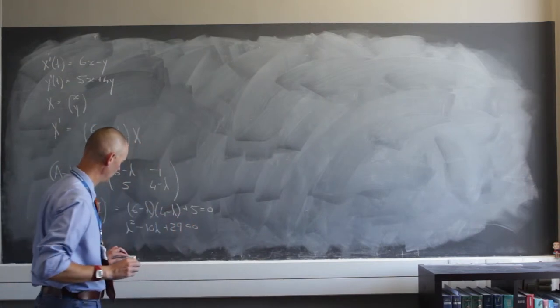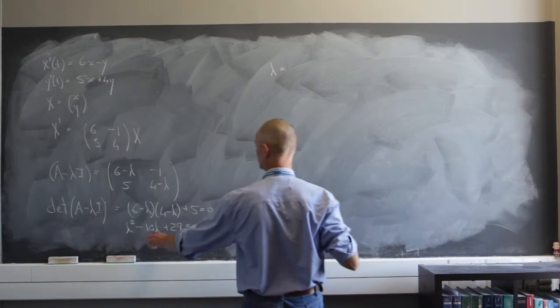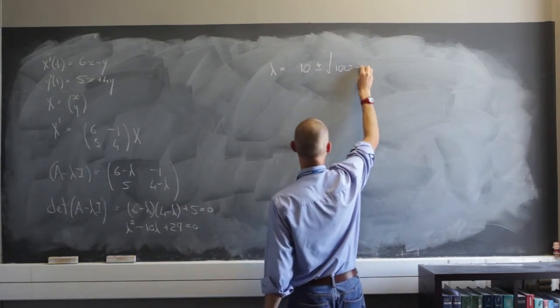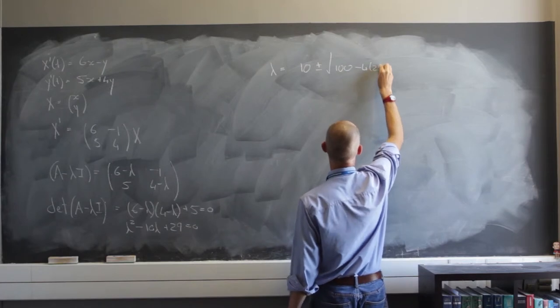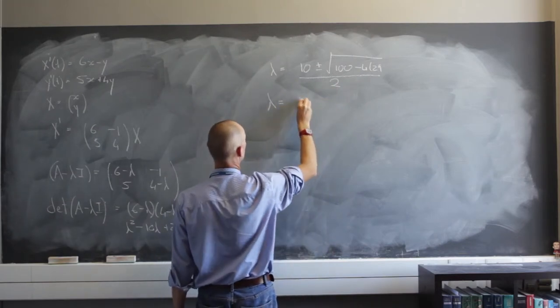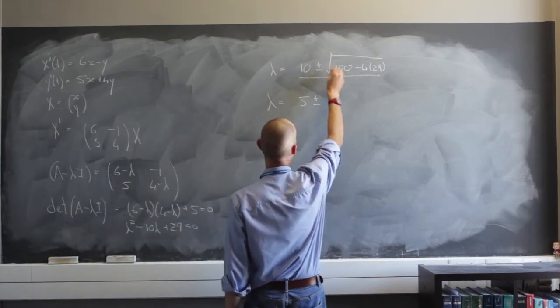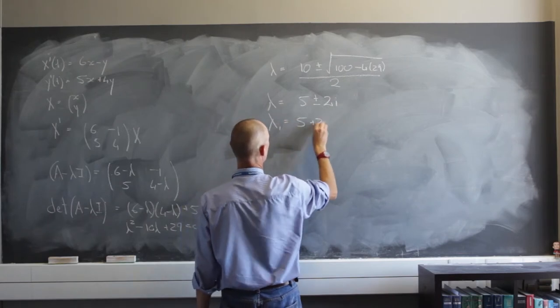It's going to equal 0. And I have to use my quadratic equation to solve this. So I'm going to say lambda equals negative b, which is negative 10, so that's 10 plus minus the square root of 100 minus 4 times 29, and it's going to be over 2 times a, which is 2. So lambda is going to equal 10 divided by 2 is 5, plus minus 100 minus 4 times 29 is 116. That's the square root of negative 16, which is 4i, divided by 2 is 2i. So I have lambda sub 1 equals 5 plus 2i and lambda sub 2 equals 5 minus 2i.